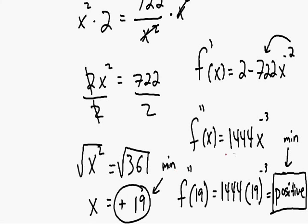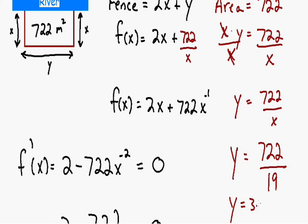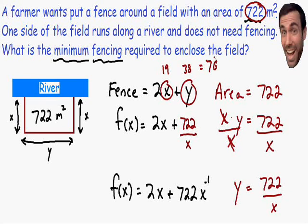Now that we know our minimum value for x, it's easy to find y. Using y equals 722 over x with x equal to 19: 722 divided by 19 equals 38, so y equals 38. Plugging x equals 19 and y equals 38 into the fence equation: 2 times 19 is 38, and 38 plus 38 equals 76. So the minimum fencing required to enclose the field is 76 meters. This field with an area of 722 square meters requires at least 76 meters of fencing.